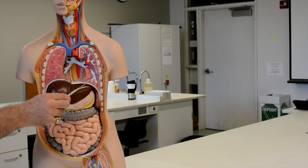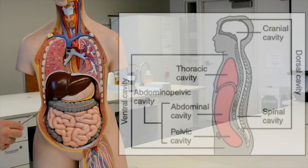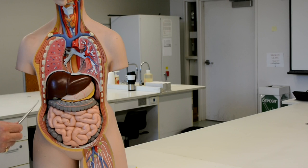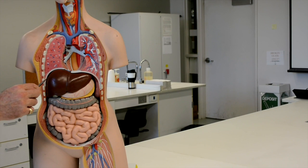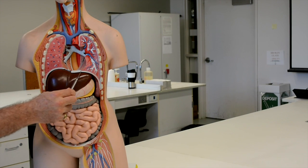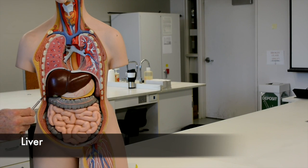Within the abdominopelvic cavity, we have some accessory organs. We have the liver here.